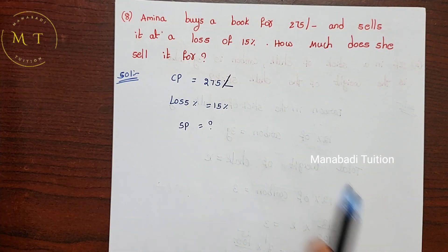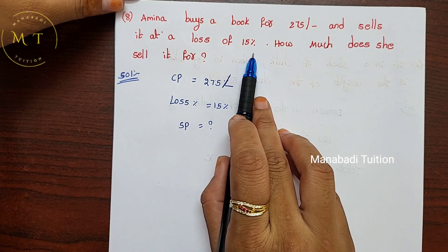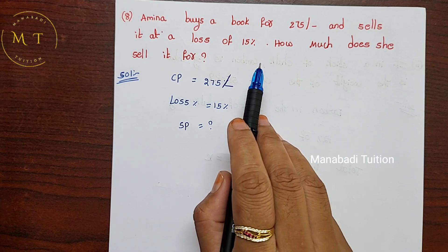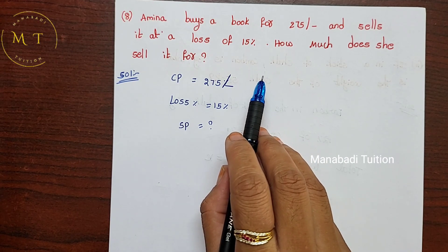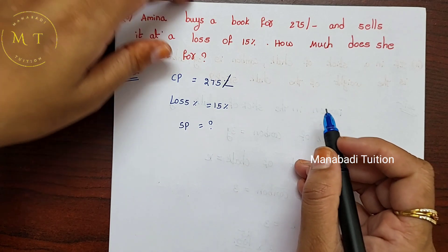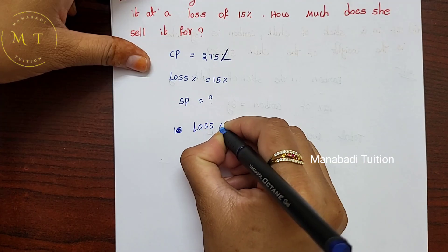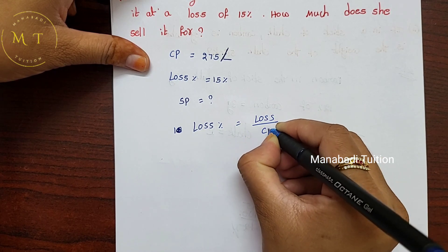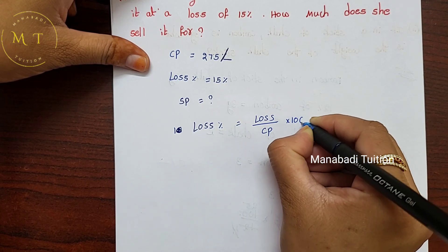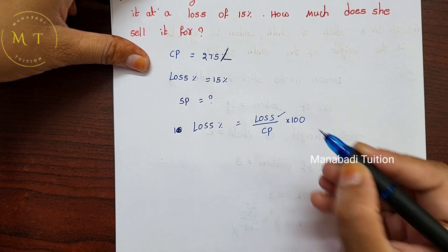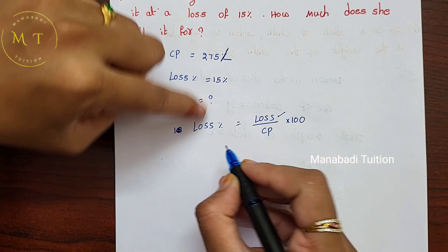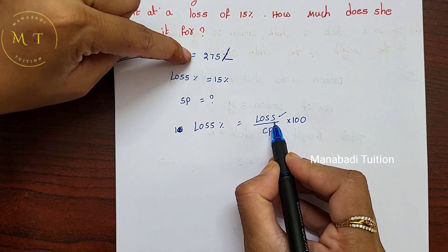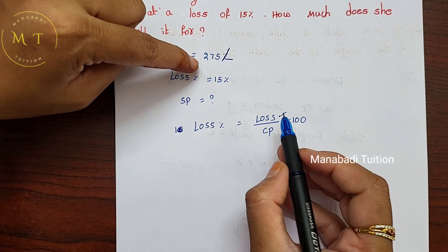First we will find out the loss. Loss percentage is equal to loss divided by cost price, into 100. So we will find out the loss using the loss percentage formula.